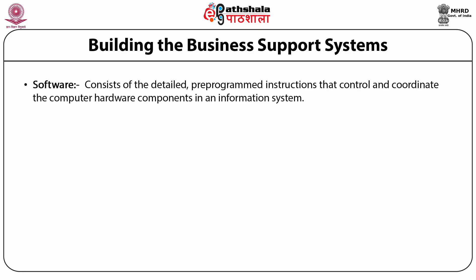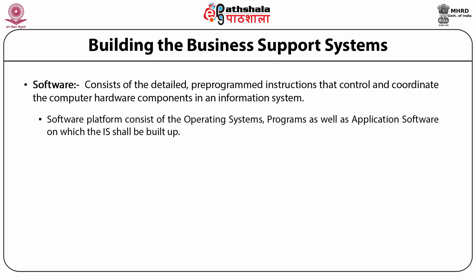The software component consists of detailed programmed instructions that control and coordinate the computer hardware components in an information system — sets of instructions that tell the computer how to input, process, output and store data. The software platform consists of operating systems, programs and application software on which the information system is built.